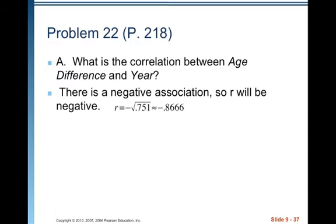Alright, so there is a negative association. We can see that in the scatter plot. So r will be negative. So r is going to be negative square root of .751 which is approximately negative .8666.